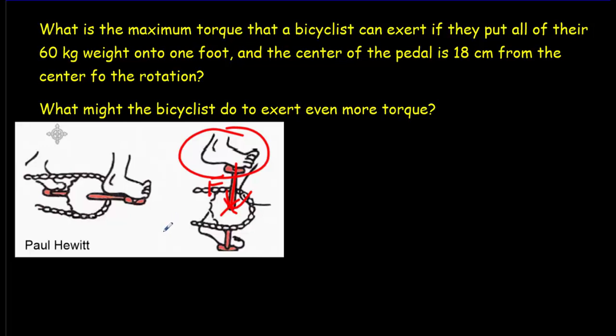The maximum torque is going to be exerted when the person puts all their weight on this foot here. And it's a 60 kilogram person, so their weight is approximately 600 newtons. And since all their weight is on that right foot, there won't be any weight on the left foot, and that pedal can come up freely.